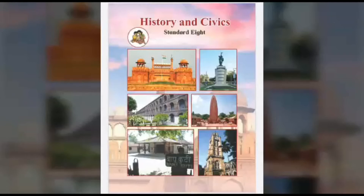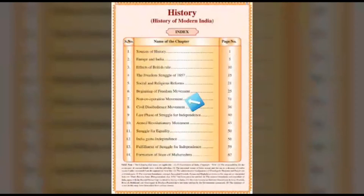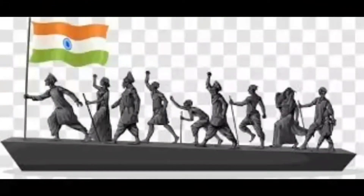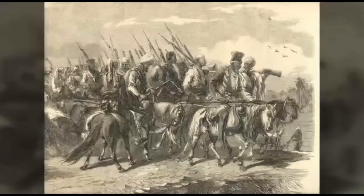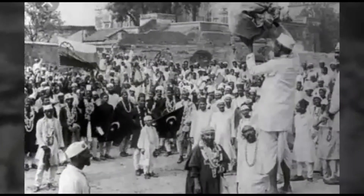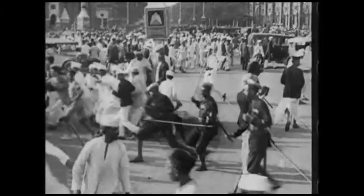Today we are going to study Standard 8th History Chapter No. 7, Non-Cooperation Movement. In the Indian National Movement, the period from 1920 to 1947 is known as the Gandhian Era. After the death of Lokmanya Tilak in 1920, the leadership of the National Movement went into the hands of Mahatma Gandhi. He gave a new direction to the freedom movement with the principles of truth, non-violence and satyagraha. Due to the influential leadership of Mahatma Gandhi, the national movement became more comprehensive, leading to the beginning of a new era in the freedom movement of India.